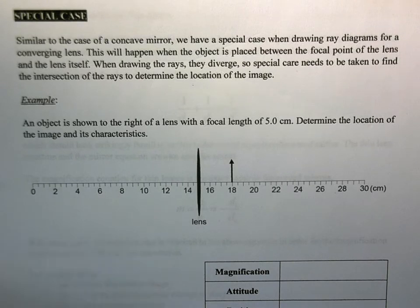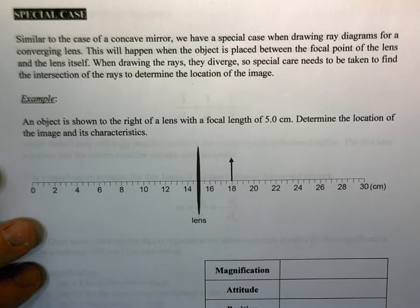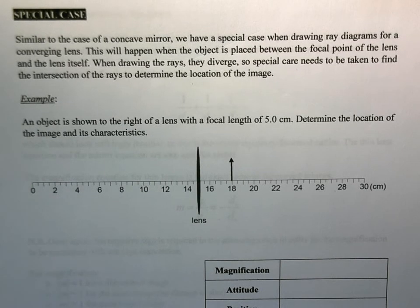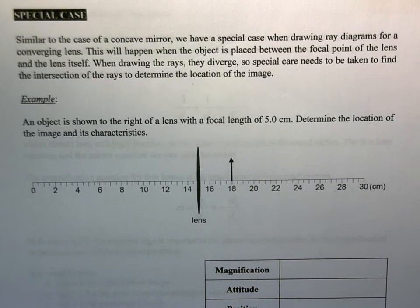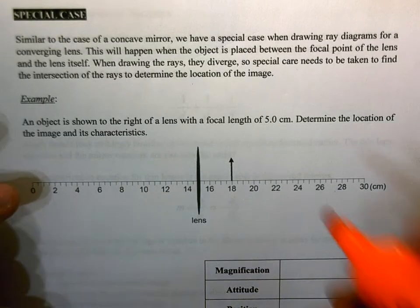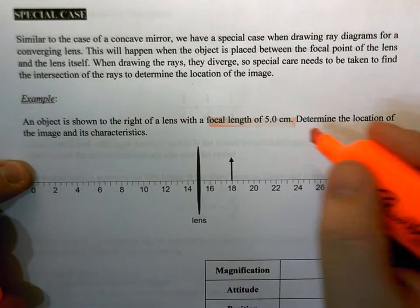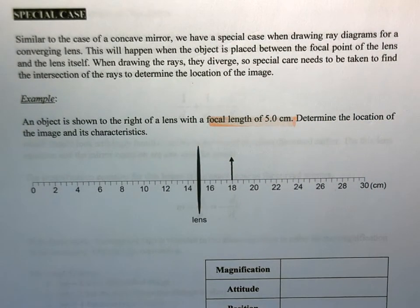We have to take a little bit of care when we draw a ray diagram. This question is formatted a little differently, especially with the diagram. Don't worry too much about it - I may have borrowed this from an old IB exam. We have an object shown to the right of a lens with a focal length of five centimeters.